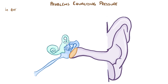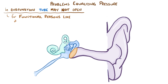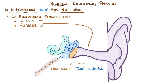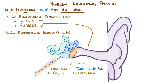Now in eustachian tube dysfunction, the tube might not be open because of a functional reason, the most common one being that a cold or allergies cause the tube to be swollen and full of secretions which block up the passageway. Rarely, there might be an anatomical reason as well, like a large tumor or scarring in the eustachian tube from long-standing inflammation.